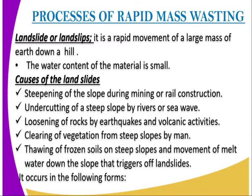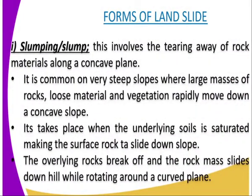Then it occurs in the following ways. We have the slump. This involves the tearing away of rock materials along a concave plane. It is common on very steep slopes where large masses of rock, loose material, and vegetation rapidly move down a concave slope.